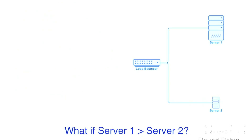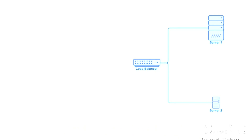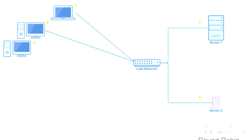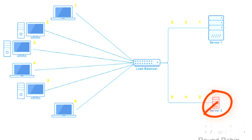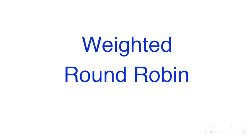But what if server one can handle higher load and server two cannot? With a standard round robin algorithm, requests still alternate: one to server one, two to server two, three to server one, and so on. The problem is server two will crash because it cannot handle the higher load. That's why we have another algorithm called the weighted round robin algorithm.